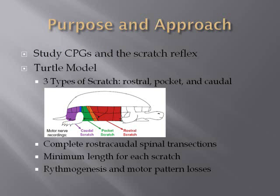Let's begin by looking at the purpose and approach of the study outlined in this article. The purpose of this study was to investigate the scratch reflex by closely studying spinal central pattern generators. A turtle model was used for these studies. Turtles have three types of scratch responses — rostral, pocket, and caudal — as outlined in the picture. In this study, complete rostrocaudal transections were performed on turtle spinal cords. The minimum length and specific spinal segments required for the generation of each scratch form were observed. Additionally, rhythmogenesis and motor pattern losses upon further transections were also observed.